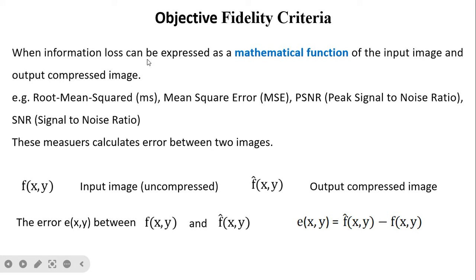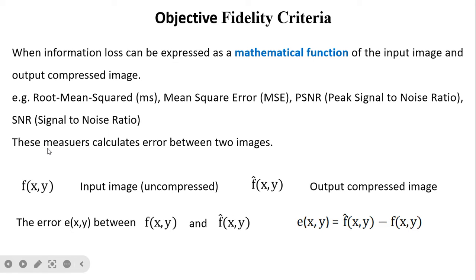Objective fidelity criteria applies when information loss can be expressed as a mathematical function of the input image and the output compressed image. Various measures exist to quantify the difference between the original and compressed image, such as root mean square error, mean square error, peak signal-to-noise ratio, and signal-to-noise ratio. Here, f(x,y) is the uncompressed input image, and f_cap(x,y) is the output compressed image obtained after removing psychological redundancy.